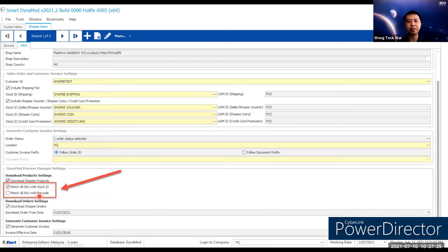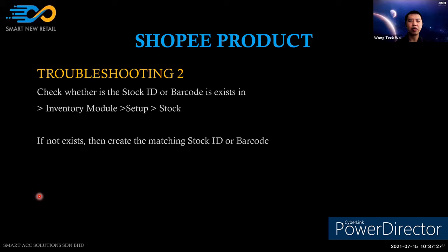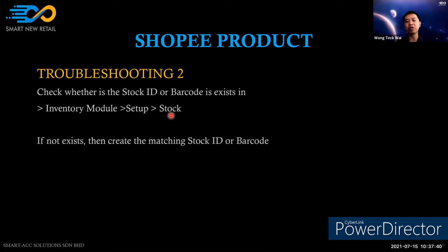The second troubleshooting step is to check whether the stock ID or barcode exists in the inventory stock. If it does not exist, you need to create the matching stock ID or barcode. For example, if 'ABC123' is not in stock maintenance, you have to create it.